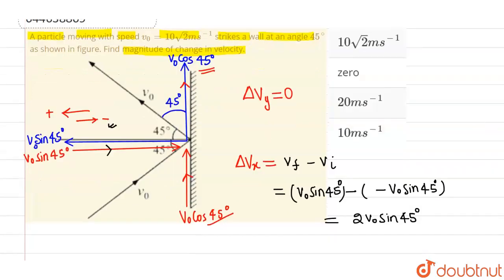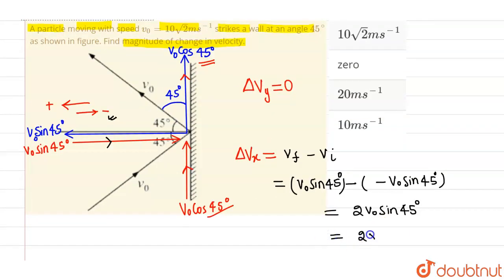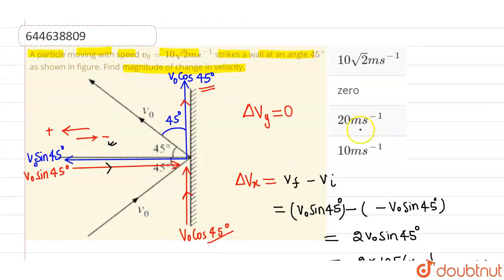Now the value of v0 is 10 root 2. So this will be 2 into 10 root 2 into value of sin 45 degrees which is 1 by root 2. So this root 2 root 2 will cancel out and overall I will be getting 20 meter per second as the change in velocity. So the correct option is option 3 and rest all options are incorrect.